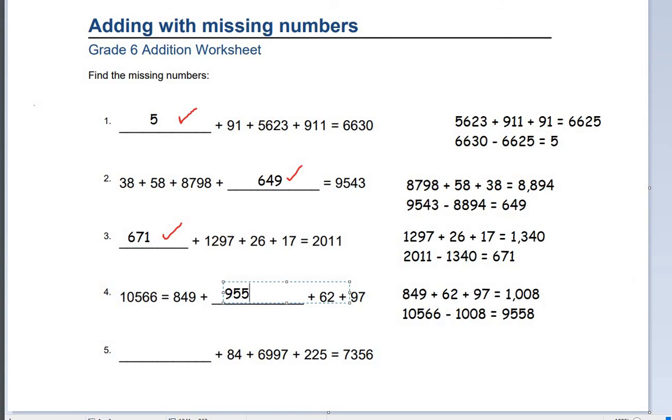Last number 5. We have to do blank plus 84 plus 6,997 plus 225 equals 7,356. So, we have to add 84 plus 6,997 plus 225, and then minus that from 7,356 to get blank. If we do this calculation, we can work out that our total is 7,306. And if we get our total, that is 50.